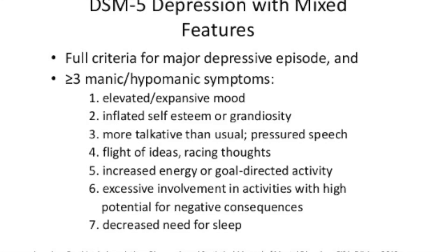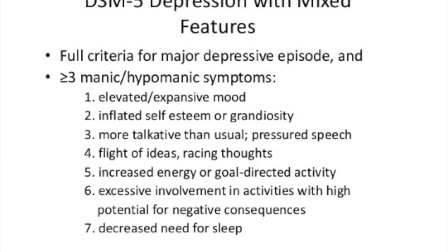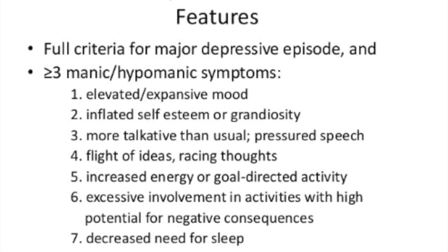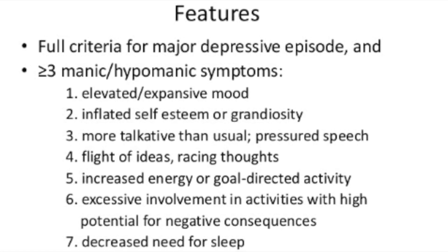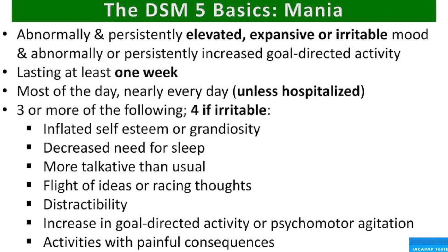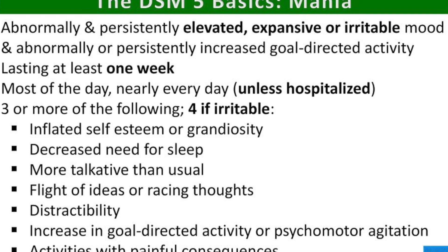Things like irritability and agitation were excluded from the DSM-5 criteria because they could happen in both regular non-mixed depression and mixed depression. So in order to meet the criteria as defined by DSM-5, you would have to meet full criteria for a major depressive episode and also have at least three manic symptoms — very similar to those specified in the bipolar criteria — such as distractibility, indiscretions, grandiosity, talkativeness, and so forth.